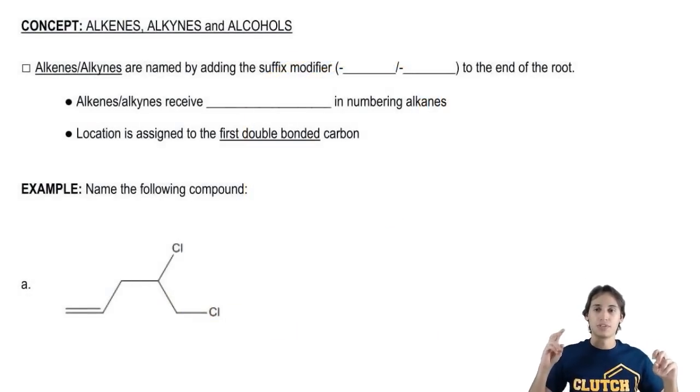First let's start off with the pi bonds, with the double bonds and the triple bonds. Alkenes and alkynes are going to be named by adding a modifier. This is going to be the very first time that we're using a modifier in an IUPAC name, so I'm going to teach you guys how to do this.